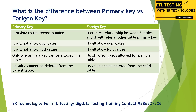Primary key values cannot be deleted from the parent table if another table is already referencing that data. When it comes to foreign key, it creates a relationship between two tables — it refers to another table's primary key as a foreign key in the current table. For example, in the department table, department ID is the primary key, and in the employee table, department ID is a foreign key.